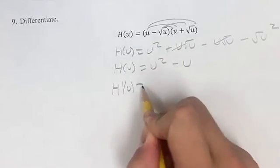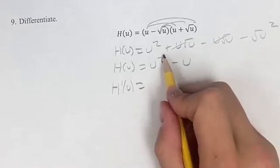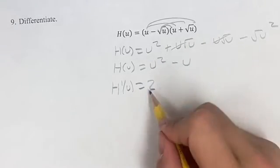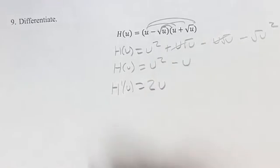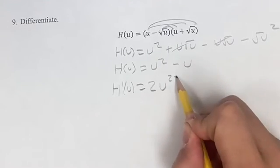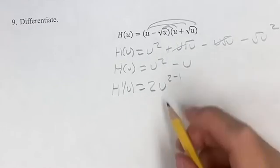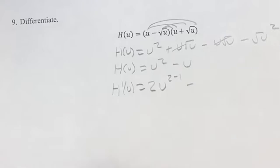The derivative in this case, we have a power function, so you bring down the exponent as your new coefficient times u to the two minus one, subtract one to get your new exponent. Minus, when we have a linear